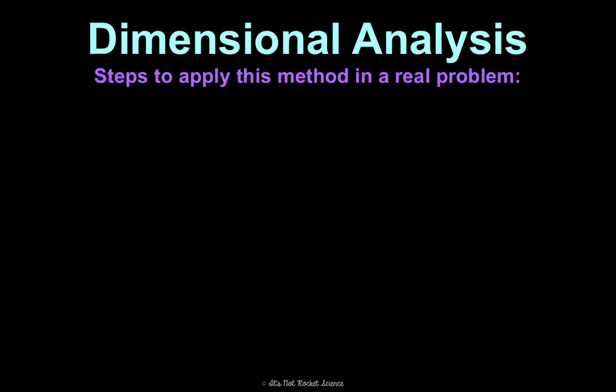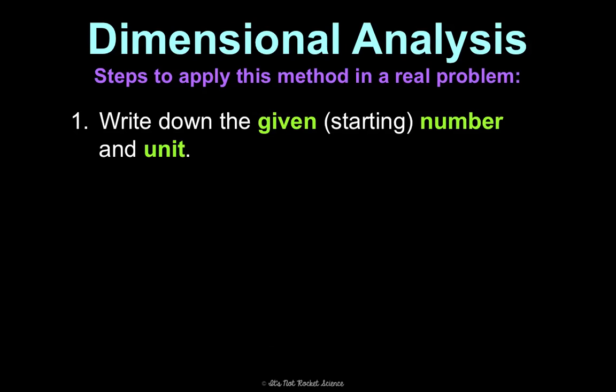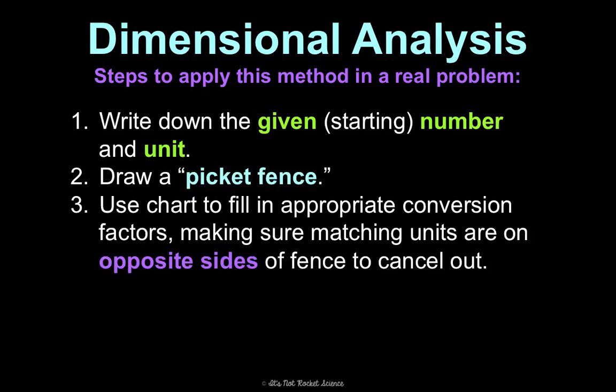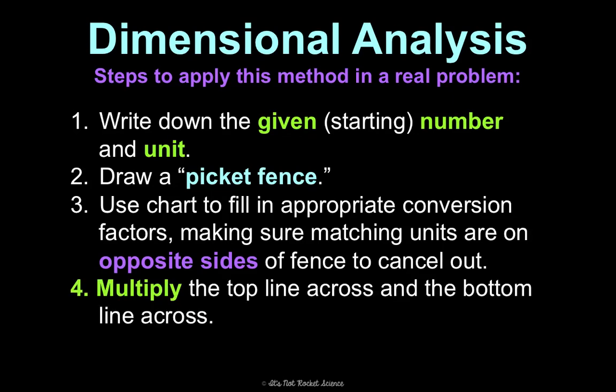So the steps to apply this into a real problem that you would get are exactly like the metric conversion steps. You write down the given number and unit, draw your picket fence, use the chart to fill in appropriate conversion factors. Make sure they're on opposite sides of the fence to cancel out. Multiply across the top and then bottom and then divide.